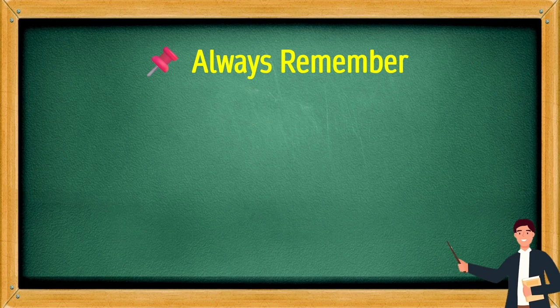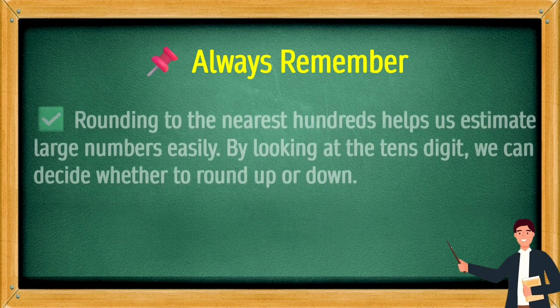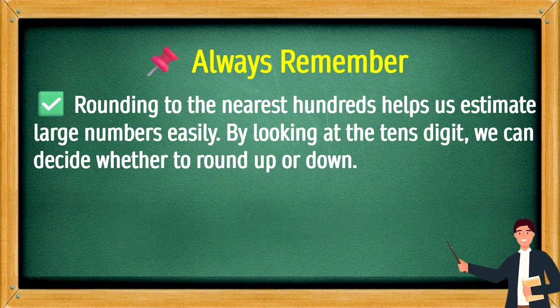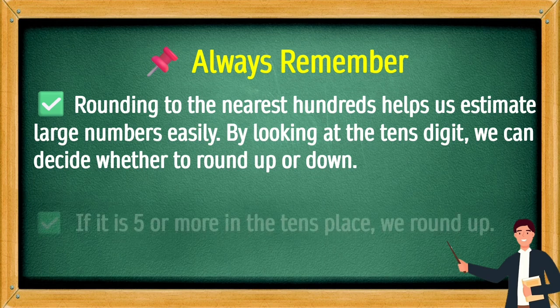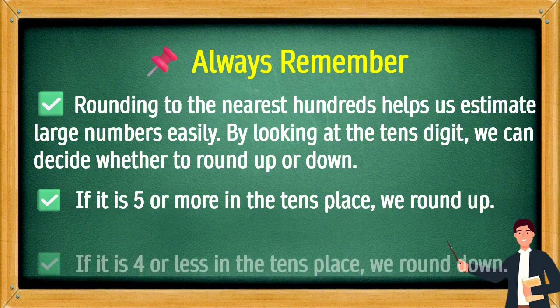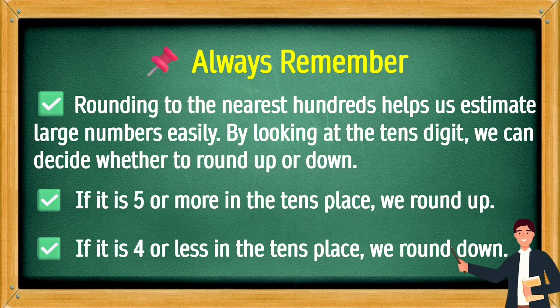Always remember, rounding to the nearest hundreds helps us estimate large numbers easily. By looking at the tenth digit, we can decide whether to round up or down. If it is 5 or more in the tens place, we round up. If it is 4 or less in the tens place, we round down.